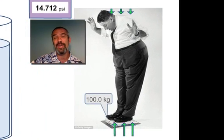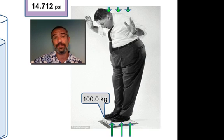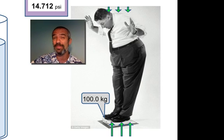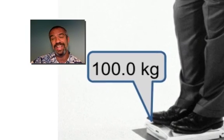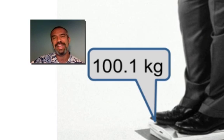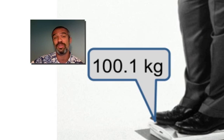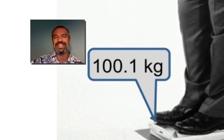So whereas the scale reads 100.0 kilograms — about 220 pounds — he actually weighs a little more than that, because he's weighing himself in air and the air is buoying him up. If we got rid of that buoyant force by weighing him in a vacuum, his true weight would go up to 100.1 kilograms. It's a very small effect because air is very low density — nowhere near as dramatic as if he were submerged in water, where he'd be almost weightless. But even in air, you weigh a little more than you think you do.